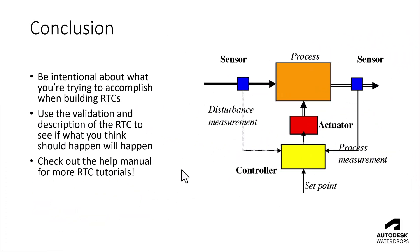Wrapping up: any advice for folks using RTCs and building them — try to be intentional about what you're trying to accomplish when laying out those different steps. Certainly use the validation and description of the RTC to read through it and make sure what you think is going to happen will happen. Pull up graphs and check times to make sure it's operating correctly. There are also lots of tutorials in the help manual, so please feel free to check those out for more information.